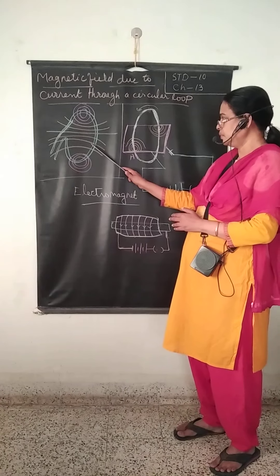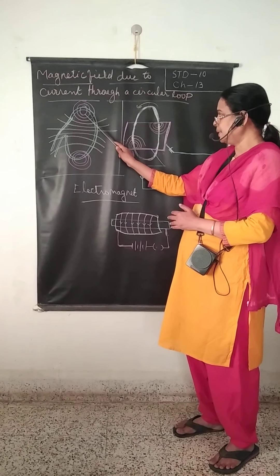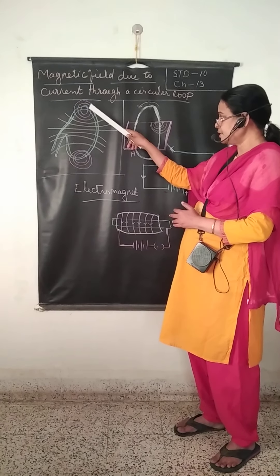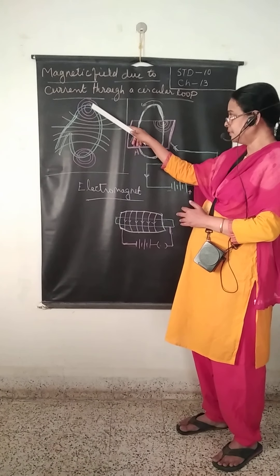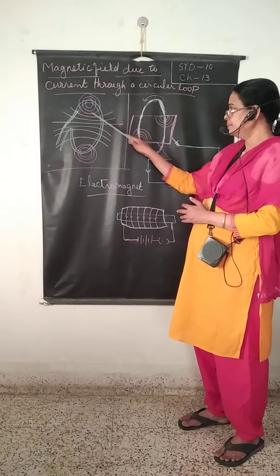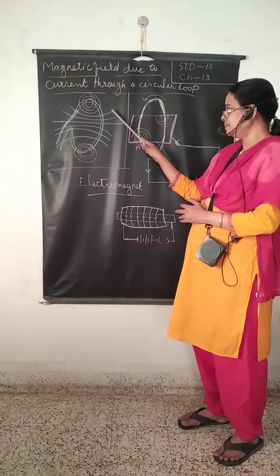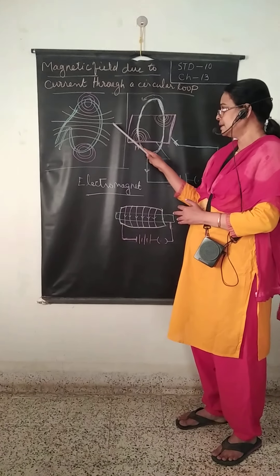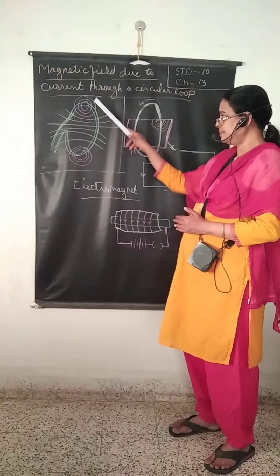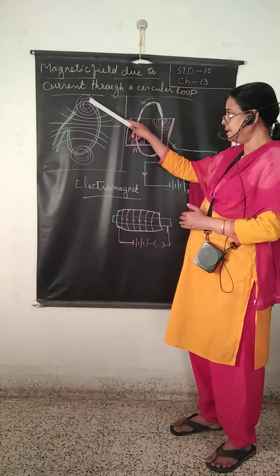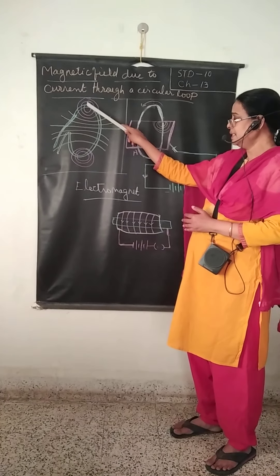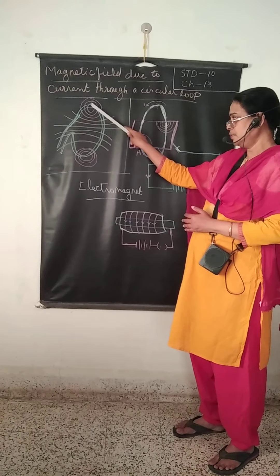You can see over here at the end of the conducting wire there are concentric circles. As it moves away from the wire, the arc becomes larger, and at the center it becomes a straight line. The magnetic field is maximum at the conducting wire and decreases as you move away.